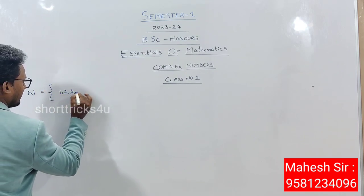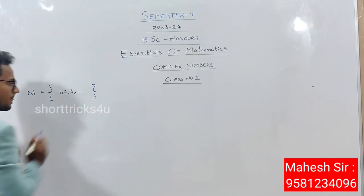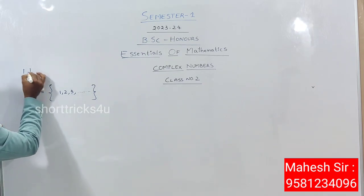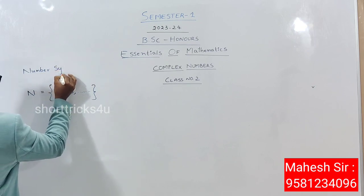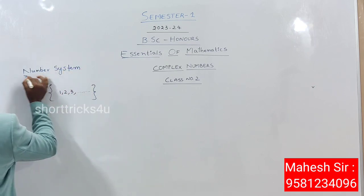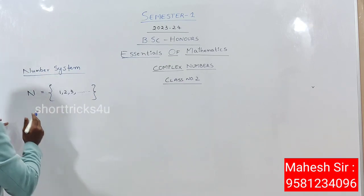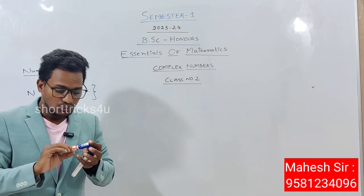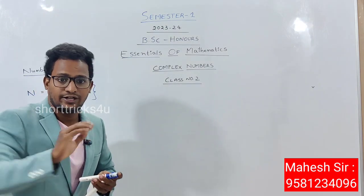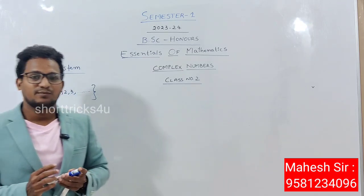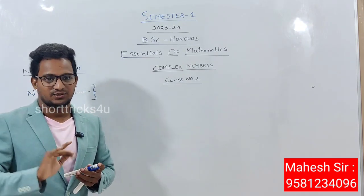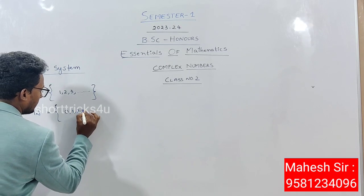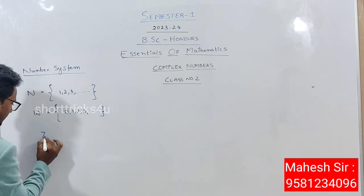Natural numbers are counting numbers. Whole numbers are nothing but 0 including the natural numbers. This is also a key difference. Z is the integers — also denoted as Z — which includes all negative values: minus 2, minus 1, 0, 1, 2 and so on to infinity. That means integers include natural numbers, whole numbers, and negative numbers.